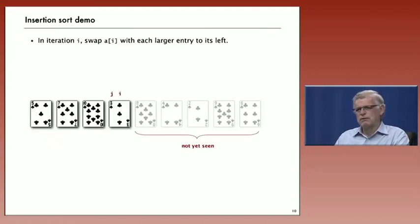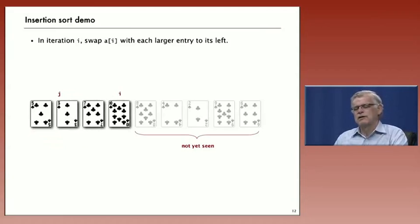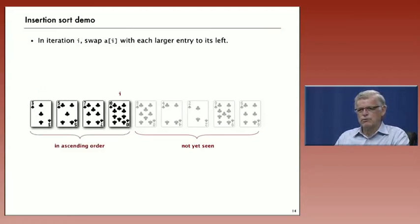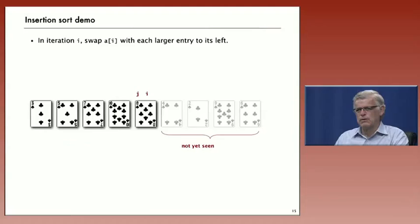So now we increment i again and we come to the three. Again, we exchange as long as the card immediately to the left is greater. And once we've done that, then we have everything to the left of i in ascending order.